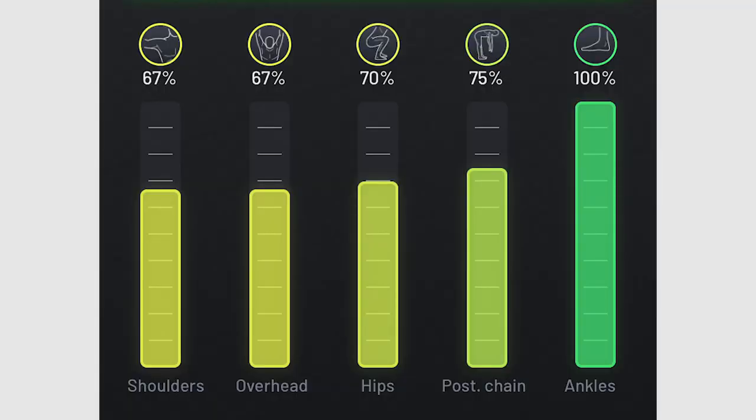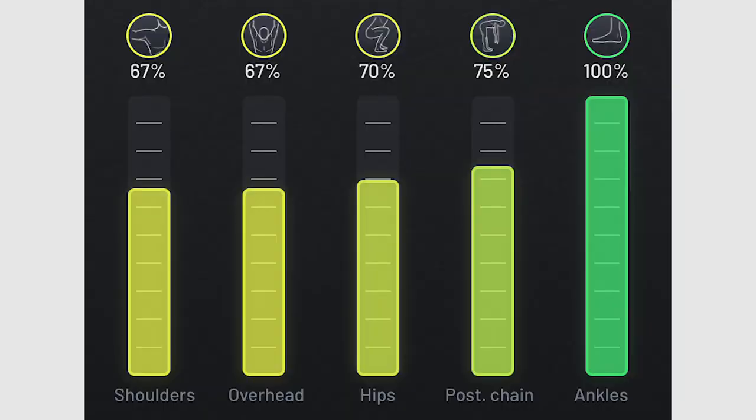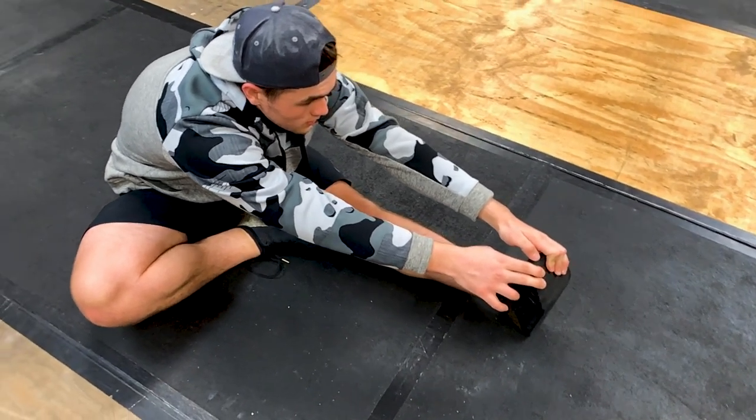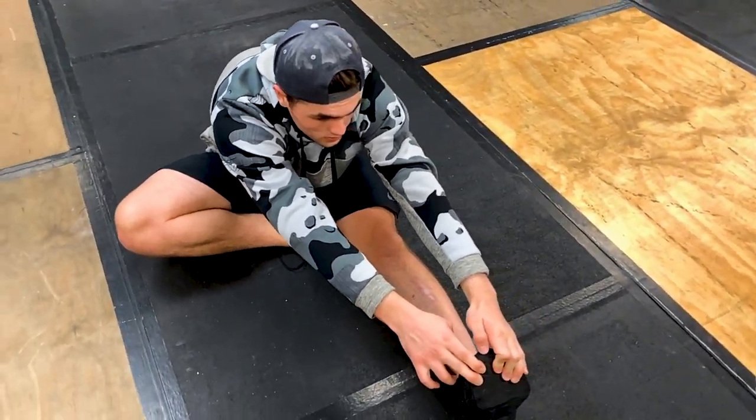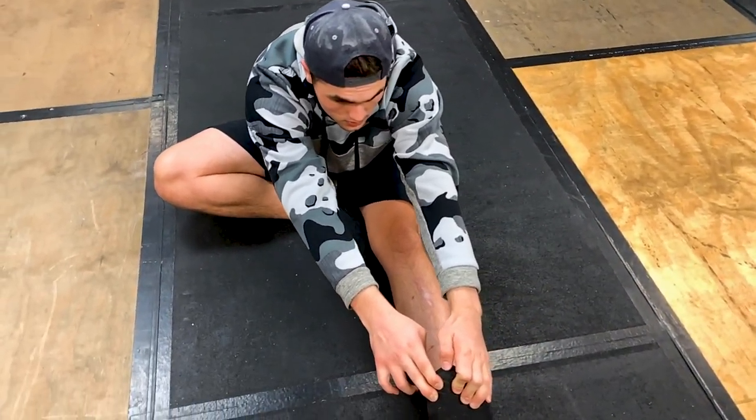One of the benefits of this free test that I'm going to be showing you is it shows you exactly where your mobility is lacking. For example, after doing the test myself, you can see that my shoulder mobility is a little less than ideal and that I need to be working on it a lot more. On the other hand, the test showed that I have extremely good ankle mobility. Using this free mobility test, you'll be able to see exactly where your weak spots are and where you should be spending more time when doing your mobility work.